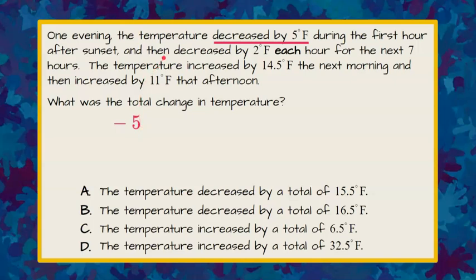Then the next thing that happened is that it decreased 2 degrees each hour for seven hours. So we're going to add on to this that it decreased, it went down 2 degrees seven times. So 7 times negative 2 would be the next thing that happened.